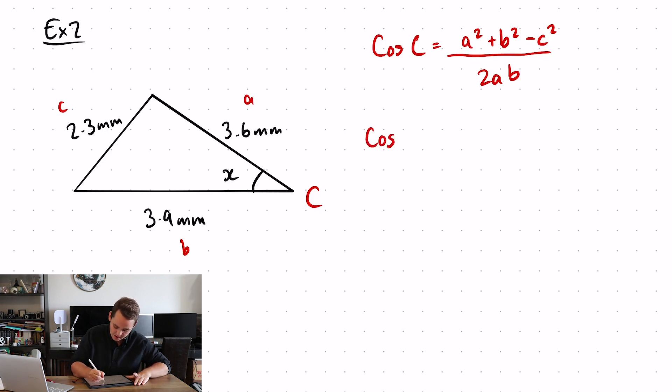So cos X is equal to 3.6 squared plus 3.9 squared minus 2.3 squared all over 2 lots of 3.6, 3.9.